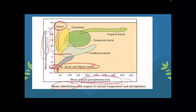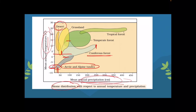Coniferous forest ranges from approximately 0 to 15 degrees Celsius and precipitation from 50 to 250 centimeters. Each biome is classified according to its characteristics — rainfall, snowfall, leaf colors — all dependent on annual temperature and annual precipitation. That is why biome depends on both these factors.